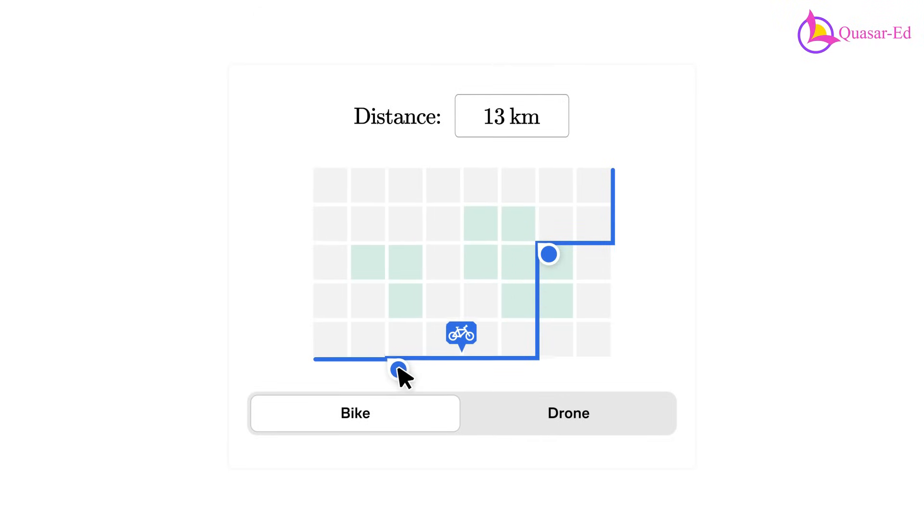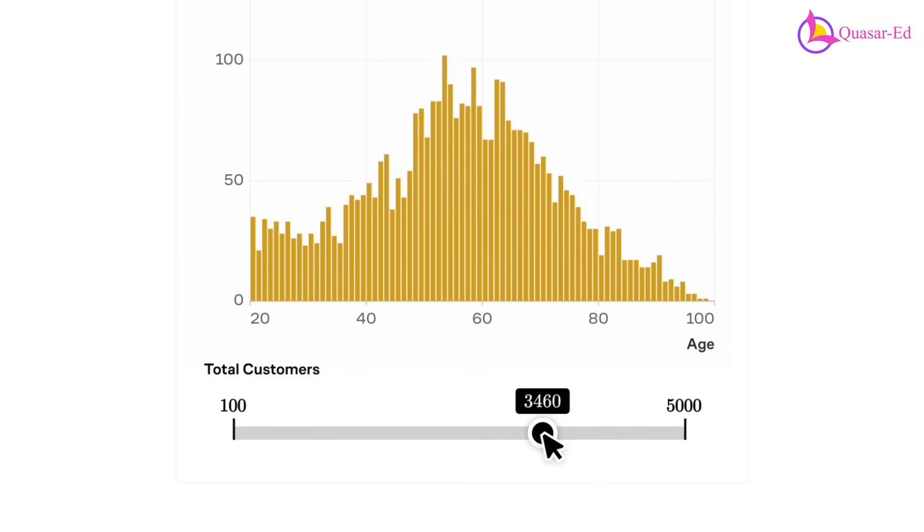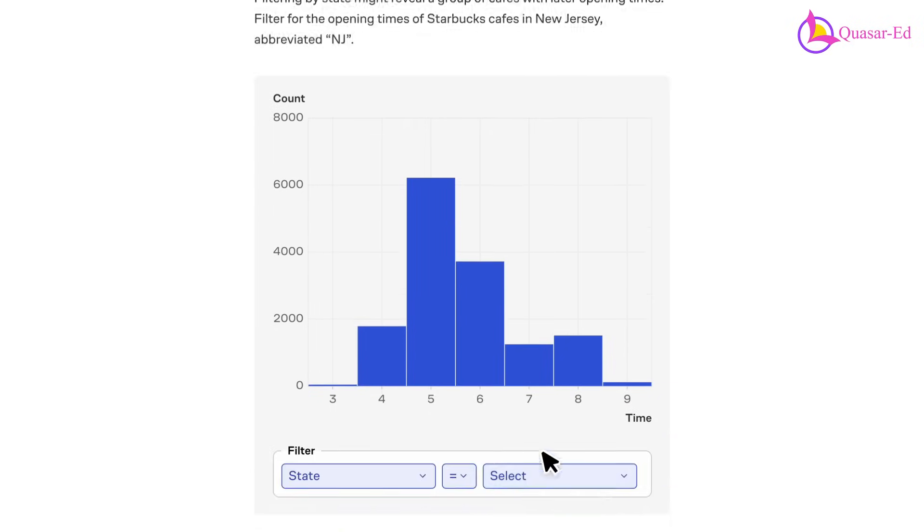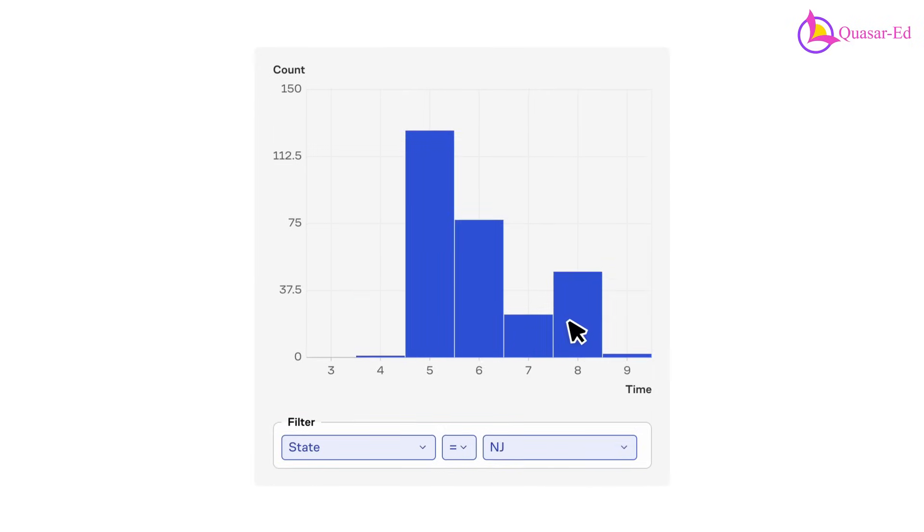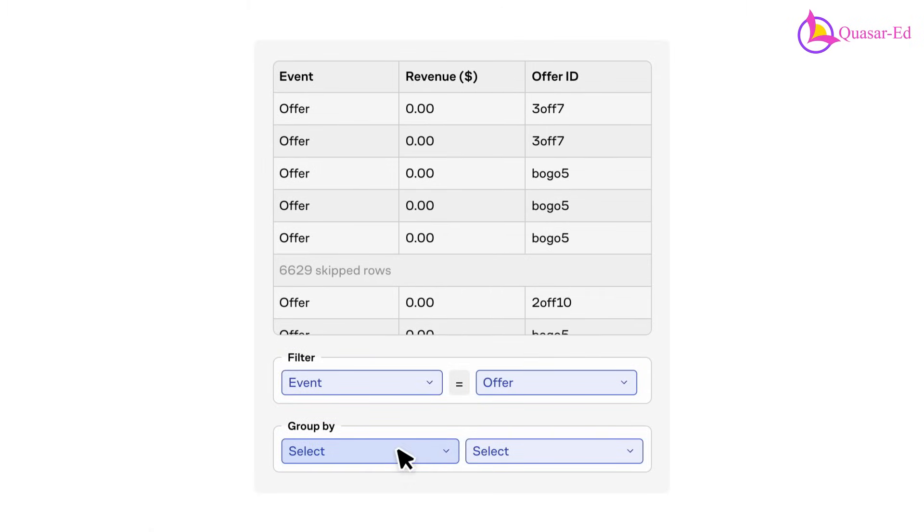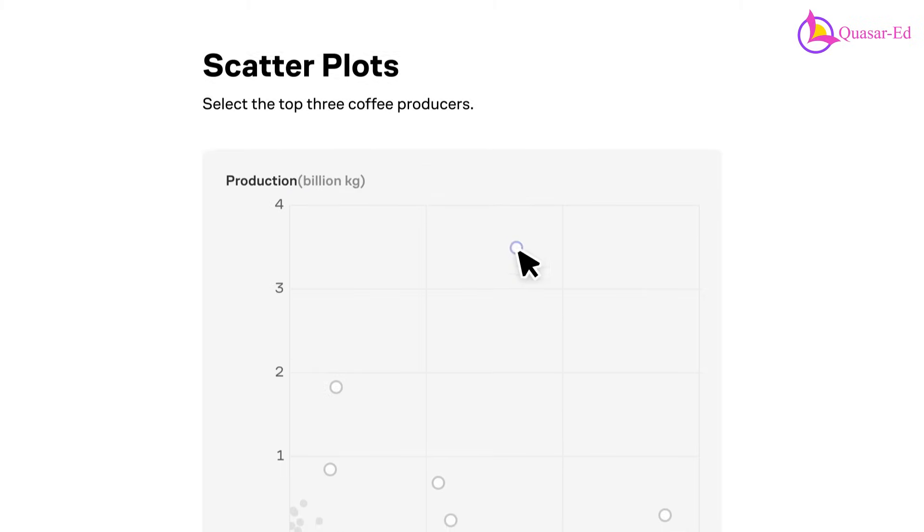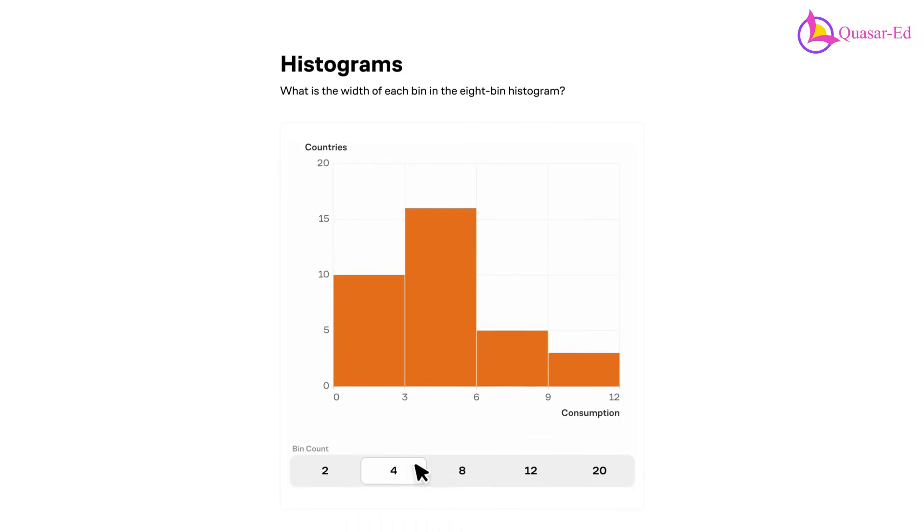Brilliant goes beyond memorization, focusing on developing your critical thinking and problem-solving skills. For instance, their math courses don't just teach theory, they show you how to apply formulas to solve real-world problems. I've personally found this incredibly helpful in understanding how math applies to both business and daily life.